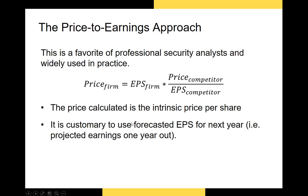What we're left with is an intrinsic value based on the current earnings of our firm and the growth prospects of that firm's competitor. We typically want to use forecasted earnings per share — the projected earnings one year out — rather than historical earnings per share. This is what analysts generally recommend.